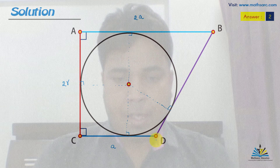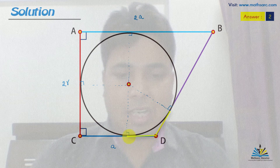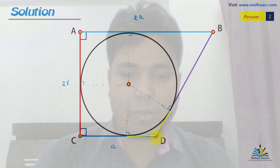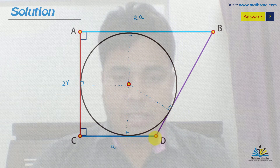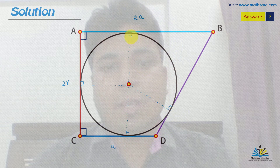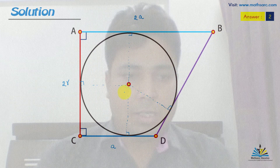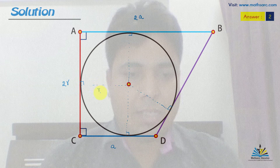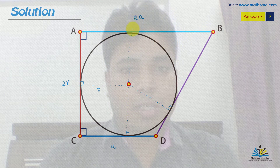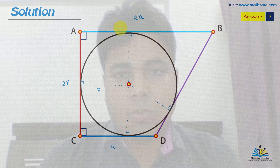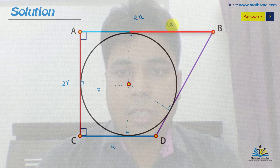We also know that the tangent lengths from an external point are equal. So the tangent lengths from external point D on this circle must be equal. Similarly, from the point on AB, the tangent lengths must be equal. Since the whole length AB is equal to 2a and one segment from the tangent point is R, the remaining length becomes 2a minus R.